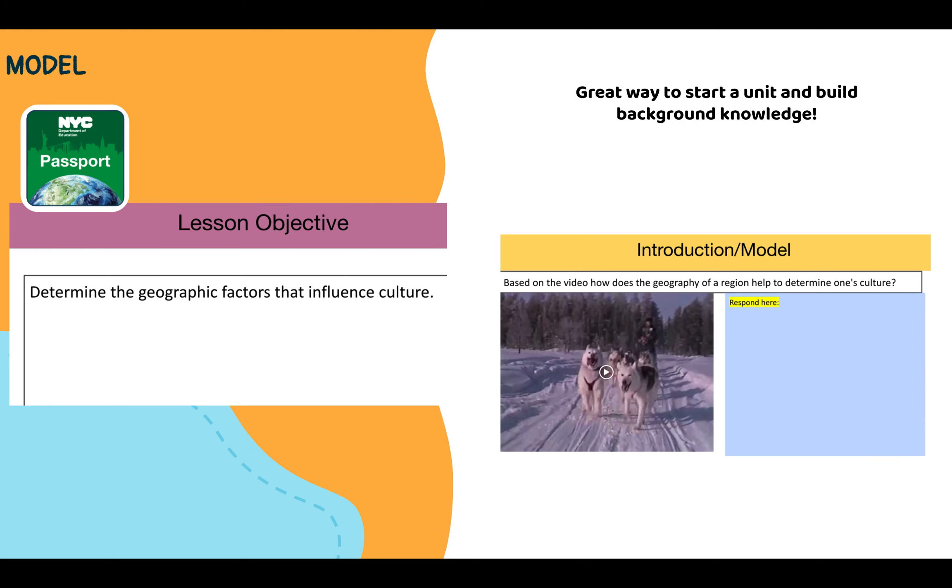One way that you can use Cornell notes in sixth grade is in the first unit. We can use the first unit as an example. In one of the lessons we see that students need to determine the geographic factors that influence culture. This is one of the first lessons, if not the first lesson, of this unit.